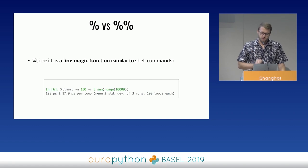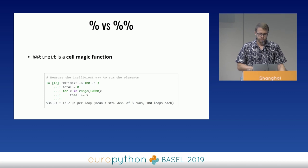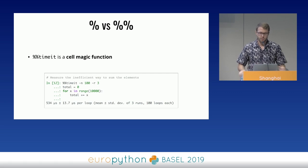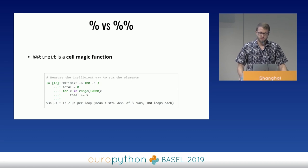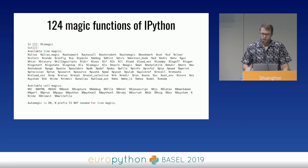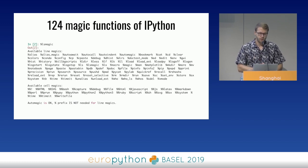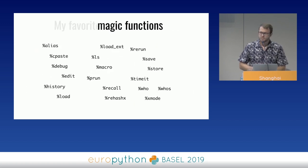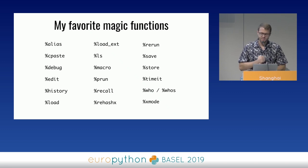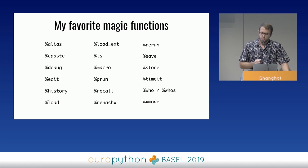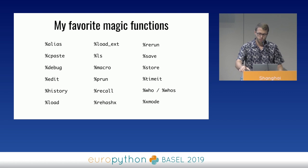There are two types of magic functions: line magics and cell magics. Line magic functions are similar to shell commands — they don't require parentheses when passing arguments. If a function starts with two percentage signs, it's a cell magic. Cell magics can accept multiple lines of input — you pass arguments right after the function name, then press enter and type the input code, and press enter twice to signal you're done. As of version 7.4 of IPython, there were 124 magic functions. I have some I use quite often, but the documentation for those methods is pretty good, so I suggest taking a look.